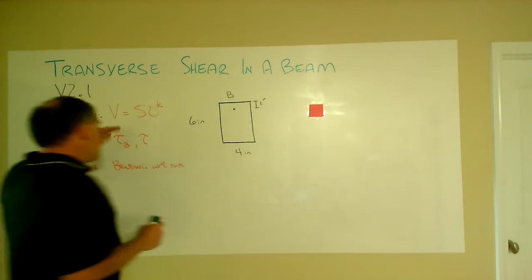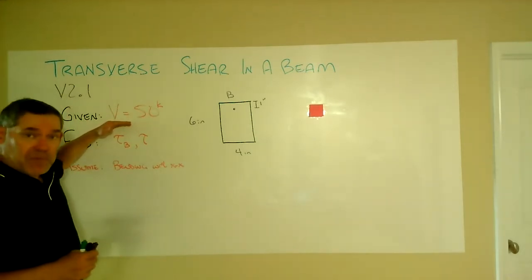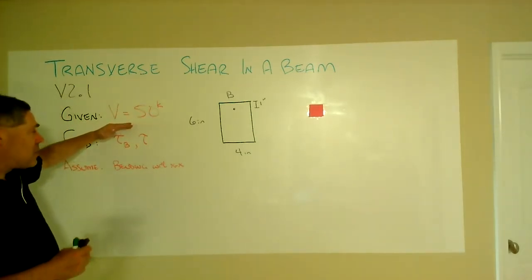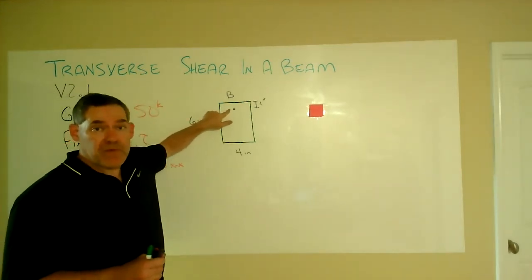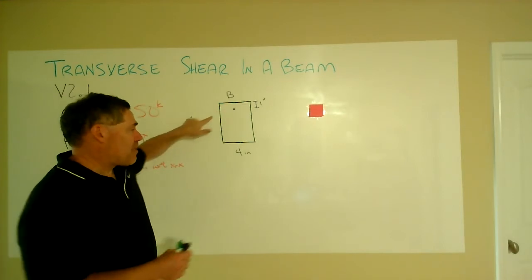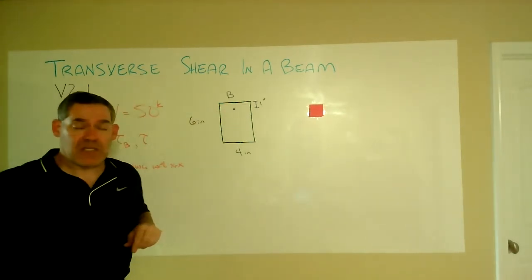Okay, so we're given that the shear force in the beam found through other means is 50 kips, and we're going to find first the shear stress at this point B, which has been identified for us as an inch down from the top of a rectangular cross-section that is four inches by six inches.